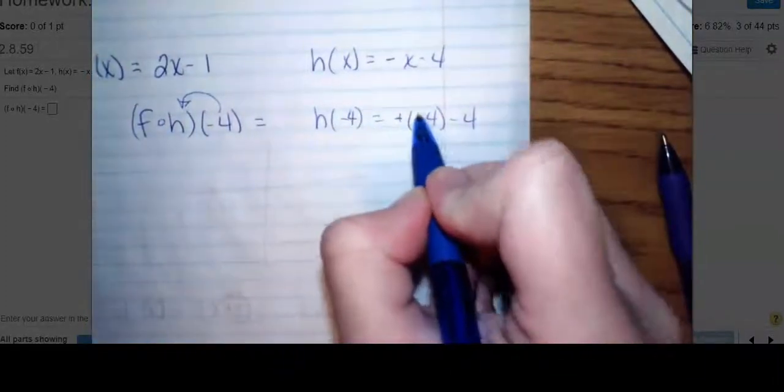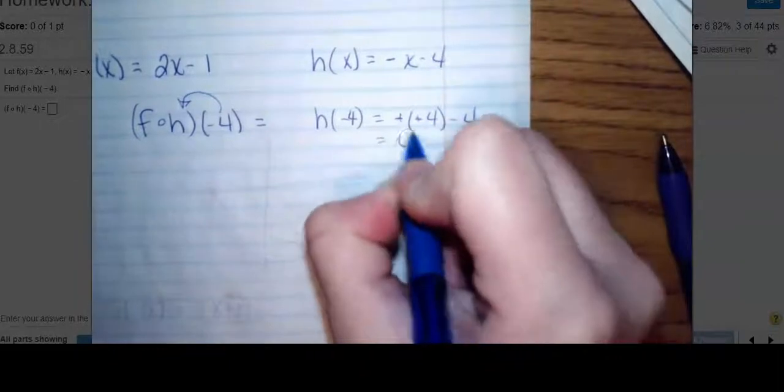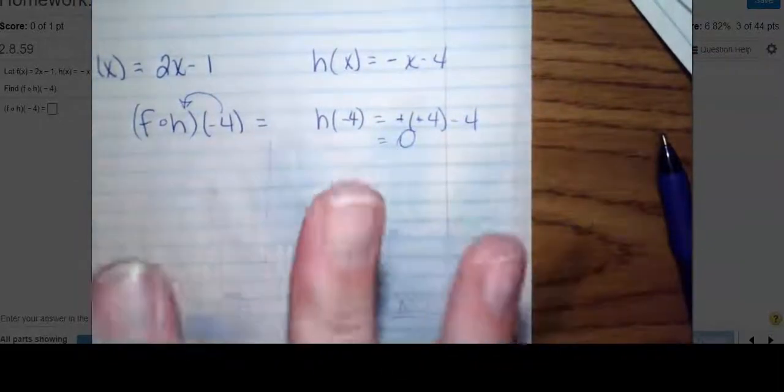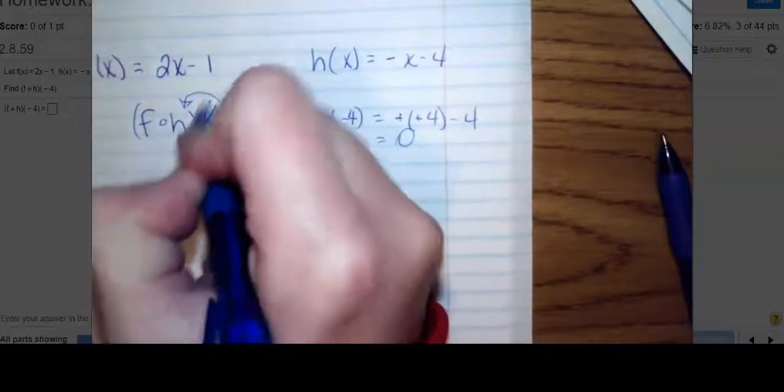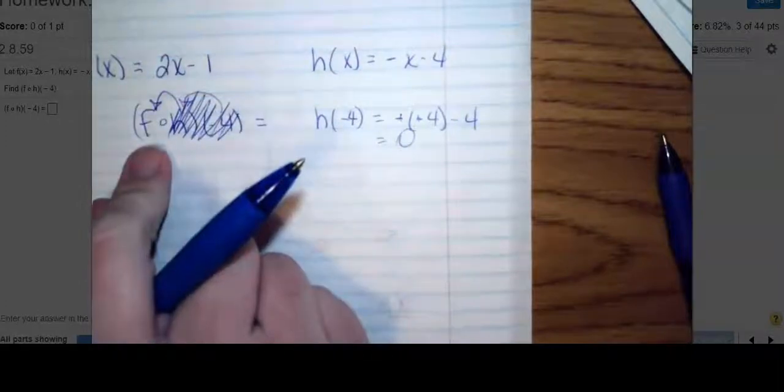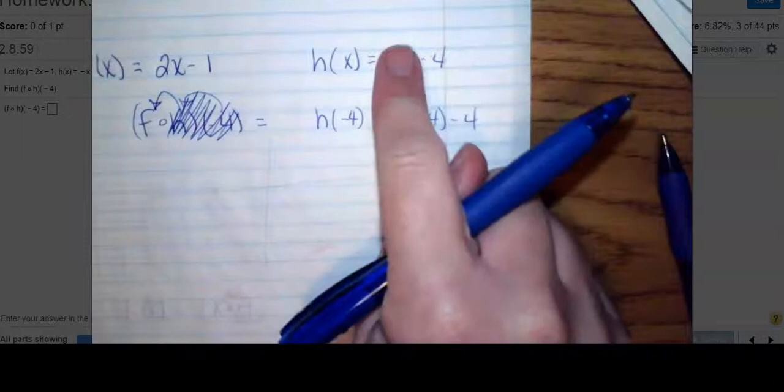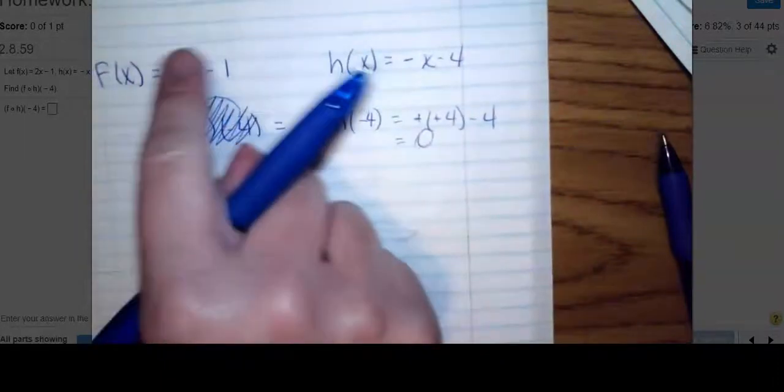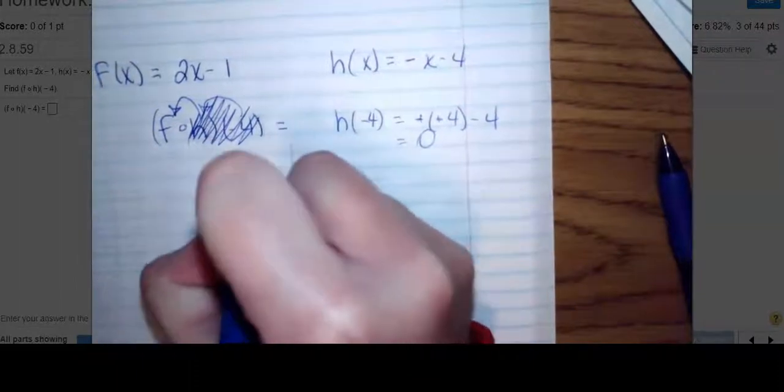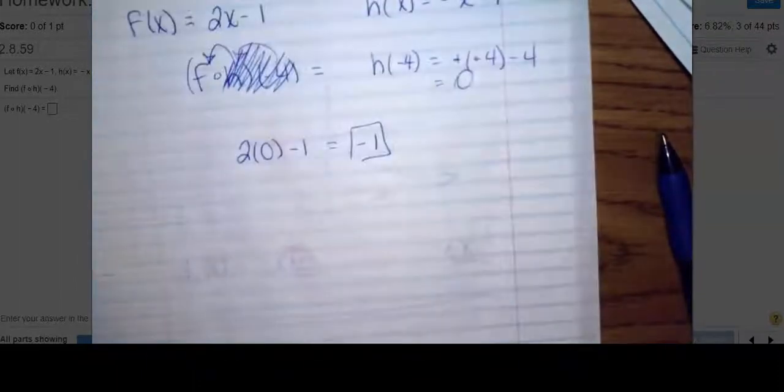h(-4) is -(-4) - 4. That gives me 0. So h(-4) gives me 0. What do I do with the 0? Hop backwards again. This part just turned into 0. Now hop backwards and put that 0 inside of f. So 2 times 0 minus 1 is -1. Your answer is -1.